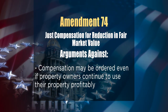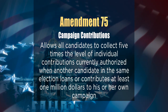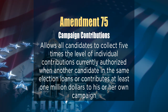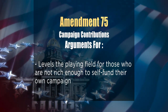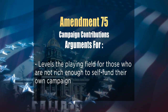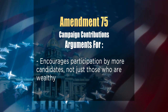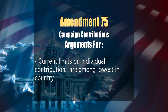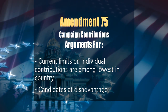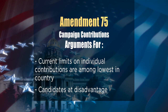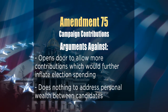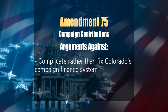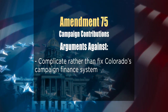Amendment 75 concerns campaign contributions. It would allow all candidates to collect five times the level of individual contributions currently authorized when another candidate in the same election loans or contributes at least $1 million to his or her own campaign. Those in favor say this levels the playing field for those who are not wealthy enough to self-fund, encourages more candidate participation, and addresses Colorado's low contribution limits. Those opposed say it opens the door to more contributions, further inflating election spending, does nothing to address personal wealth between candidates, and complicates Colorado's campaign finance system by allowing more money to be spent.